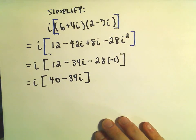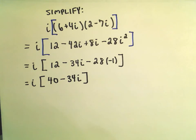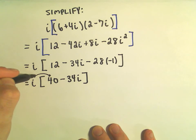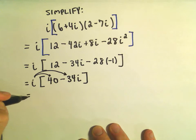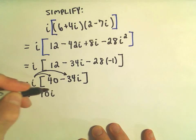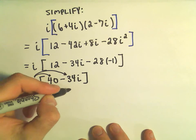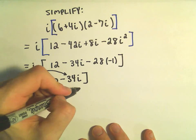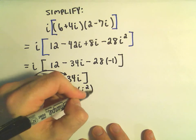So I think I've done about all the simplification I can inside the brackets. So now I'm going to distribute the i to both terms. So we have i times 40, which is simply 40i.